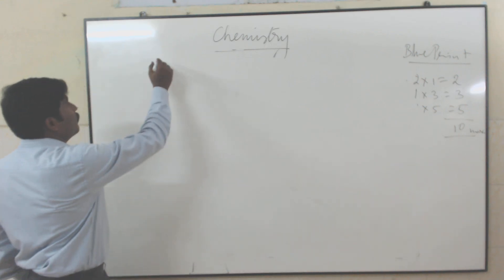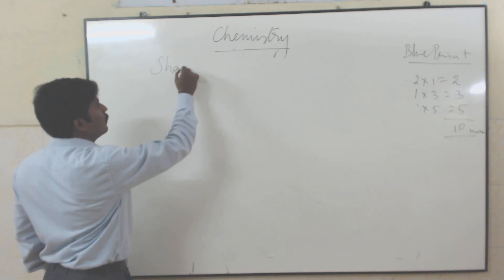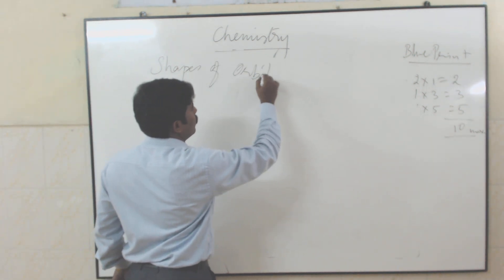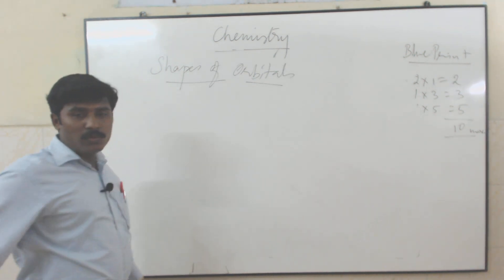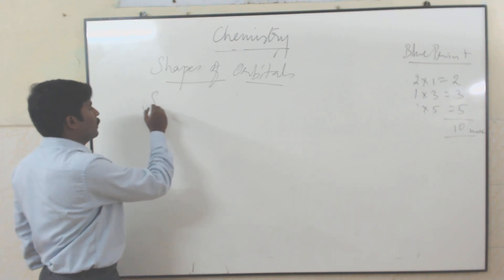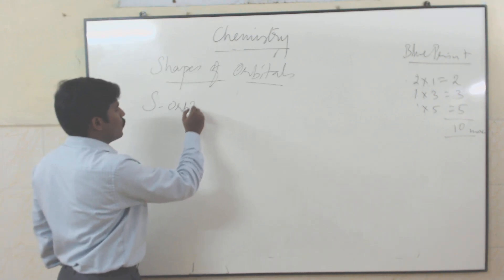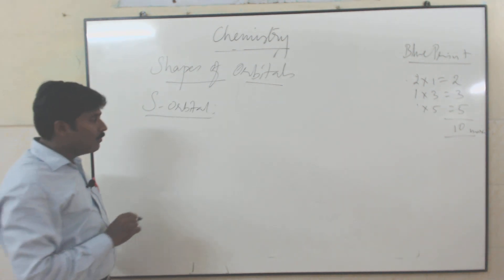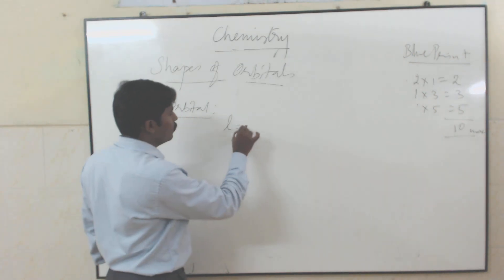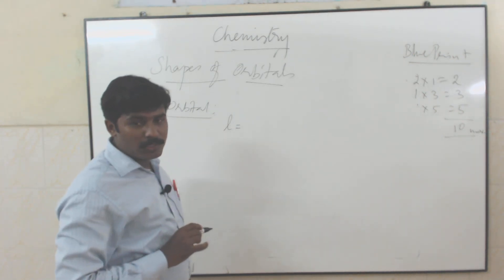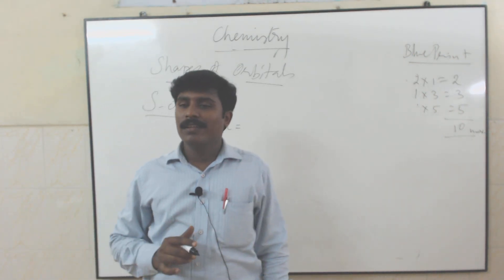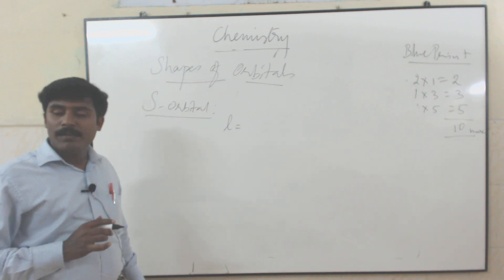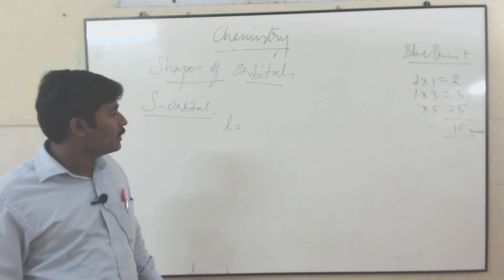The next topic is shape of orbitals. The first one is s orbital. You should already know the quantum numbers from previous study: the first is principal quantum number, then azimuthal quantum number, then magnetic quantum number, and spin quantum number.